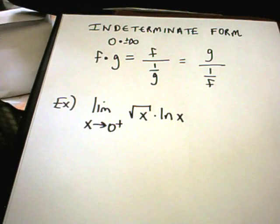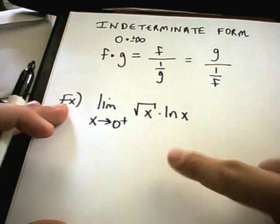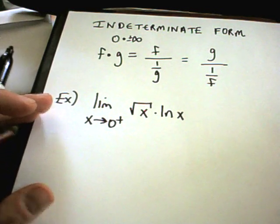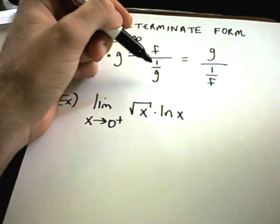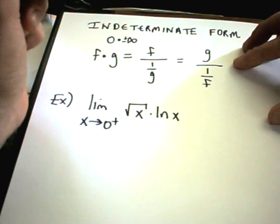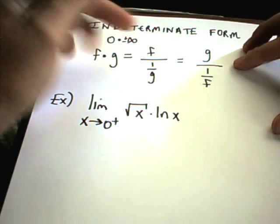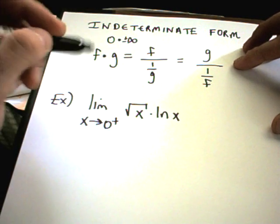Algebraically, I should be careful though. There's definitely some problems where you may take one over one of the functions and find that you're actually getting a more complicated expression. If that happens, just go back and try putting the other one in the denominator.